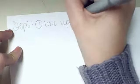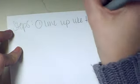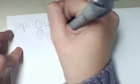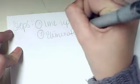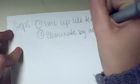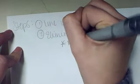The first step is to line up your like terms. The second is to eliminate by adding. And to do that you may need to multiply first.